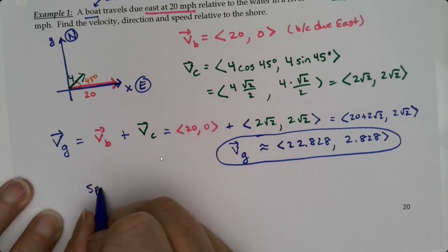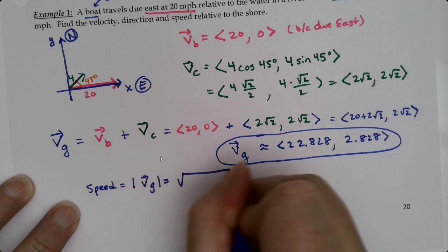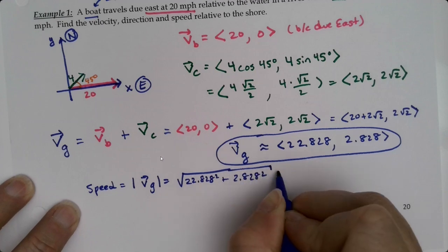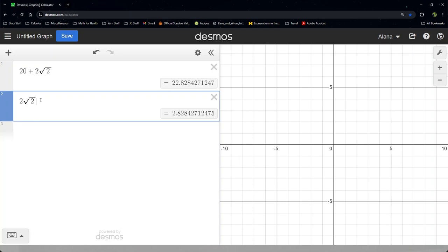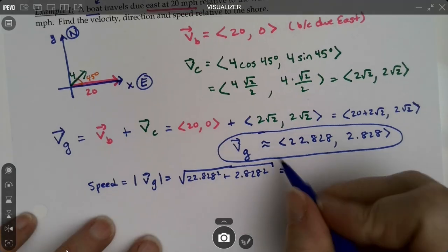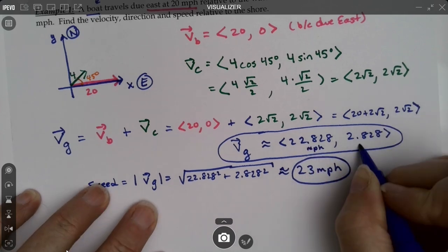It's the square root of 22.828 squared plus 2.828 squared. We get about 23 miles per hour.